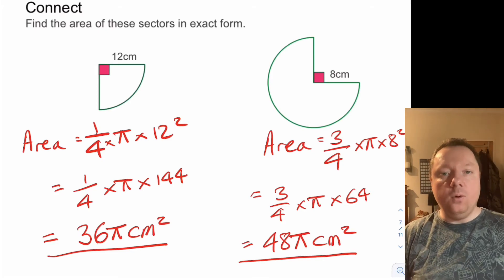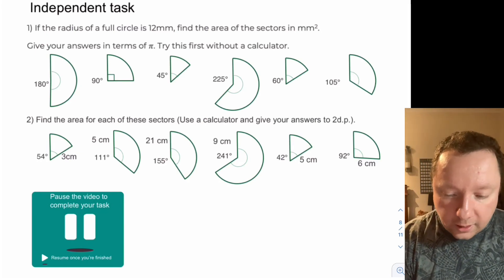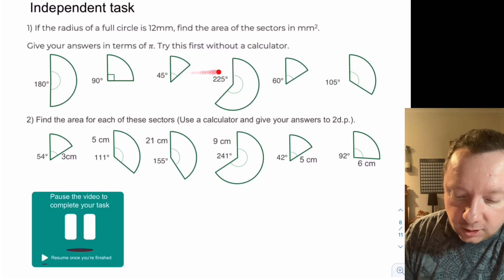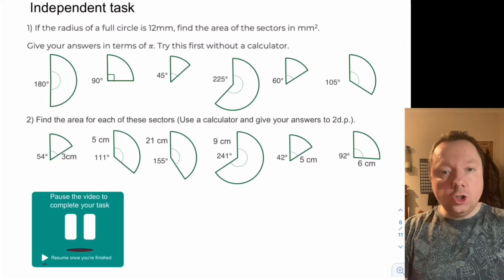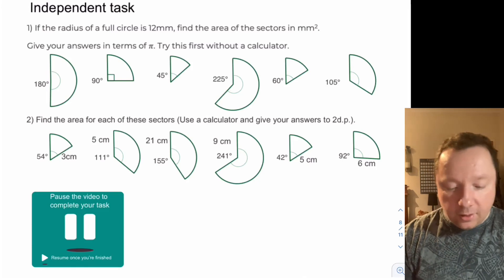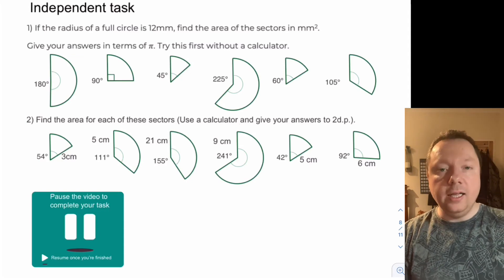Again, that's an exact formula in terms of pi. For your independent task: Question one — if the radius of the full circle is 12 millimetres, find the area of the sectors in millimetres squared and give your answer in terms of pi. Remember: always write down the angle out of 360 first, then simplify that fraction before proceeding. Question two — find the area of each of these sectors using a calculator and give your answers to two decimal places. Pause the video and come back to check your answers when you're done.